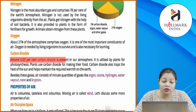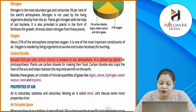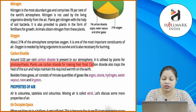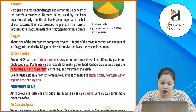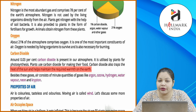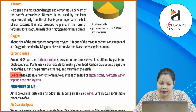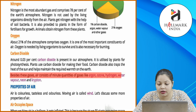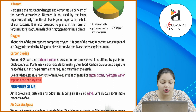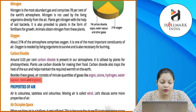Carbon dioxide: around 0.03% carbon dioxide is present in our atmosphere. It is used by plants for photosynthesis — plants use carbon dioxide for making their food. Carbon dioxide also traps the heat of the sun and helps maintain the required warmth of the earth. Beside these gases, air also consists of minute quantities of gases like argon, ozone, hydrogen, water vapor, neon and krypton.